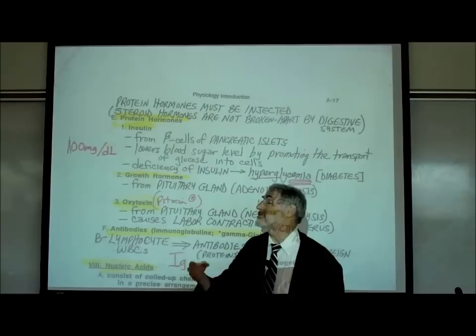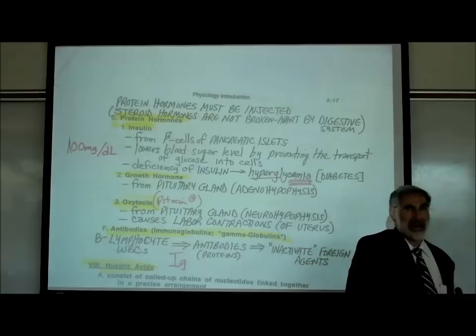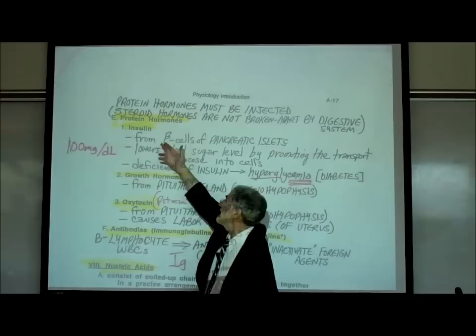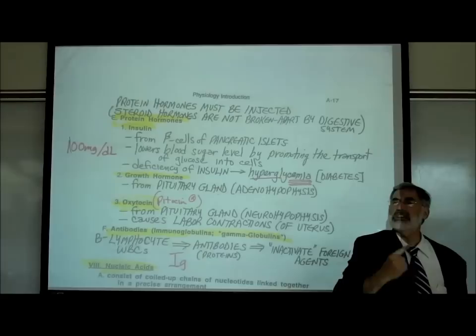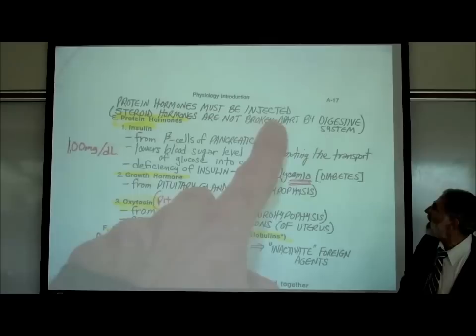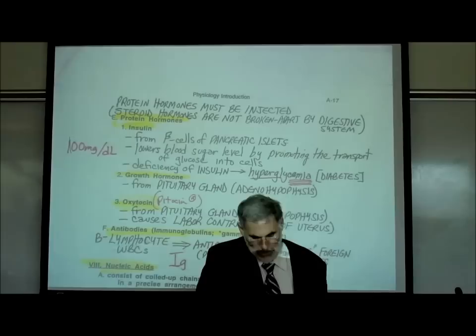There are many differences between steroid hormones — such as estrogen, glucocorticoids, mineralocorticoids, and calciferol — versus protein hormones like insulin, growth hormone, or oxytocin. Here's one key difference: steroid hormones are not broken apart by the digestive system, but proteins are.